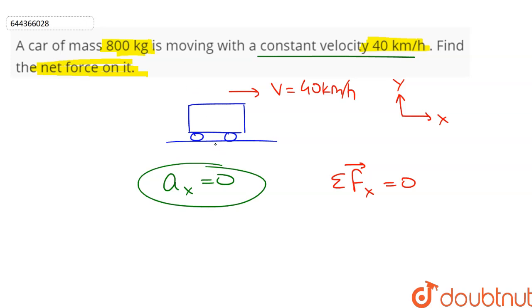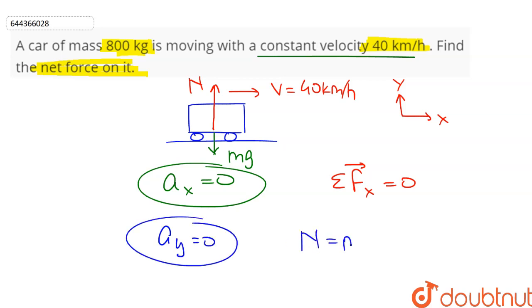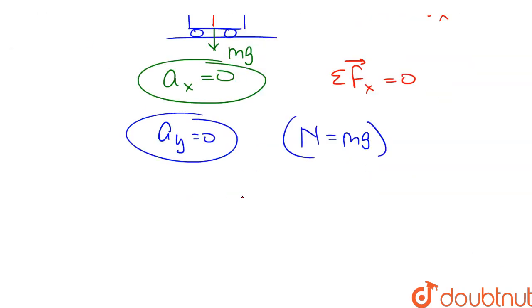Now looking at the y-direction, there is a weight force equal to mg acting in the downward direction, and the ground will provide an equal and opposite normal force N in the upward direction, because there is no acceleration in the y-direction as well. So N becomes equal to mg, and the net force sigma Fy equals N minus mg, which becomes equal to zero.